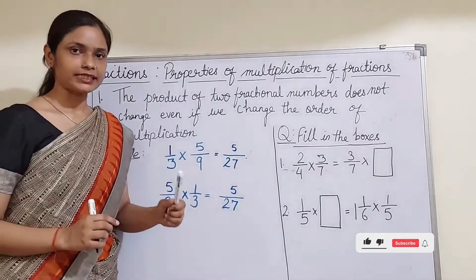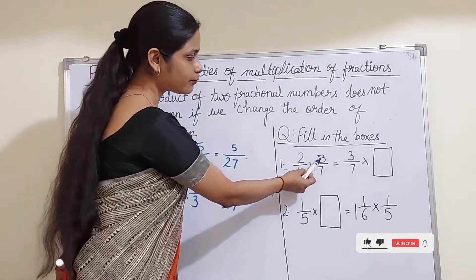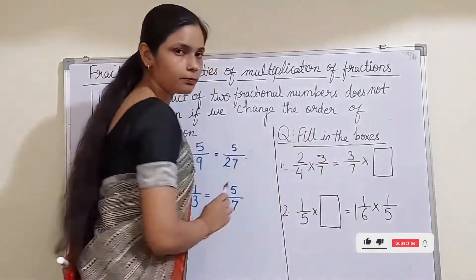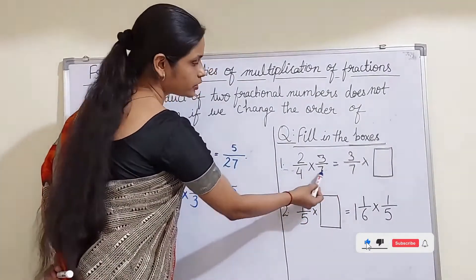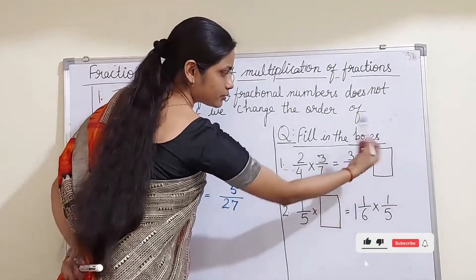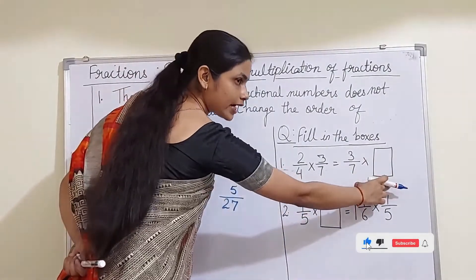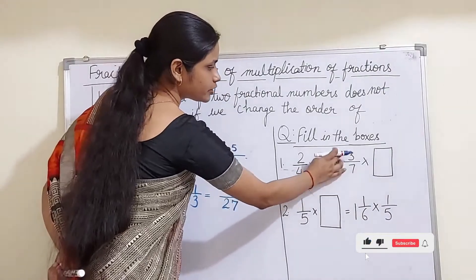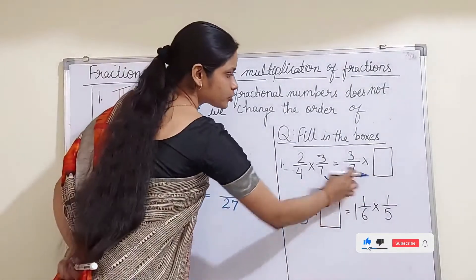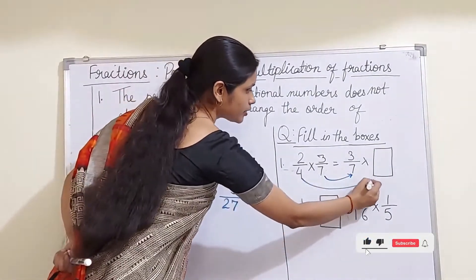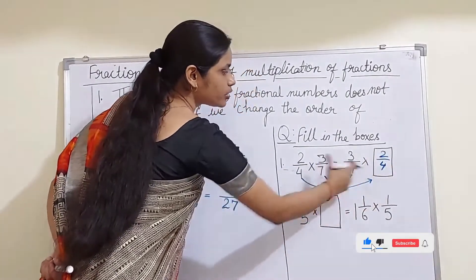Now let us do a question: fill in the boxes. It is written 2/4 multiplied by 3/7 is equal to 3/7 multiplied by what number? The left hand side should be equal to the right hand side. Since 3/7 is already on the right hand side, the missing fraction must be 2/4. So on the right hand side it should be 2/4, only then both sides will be equal.